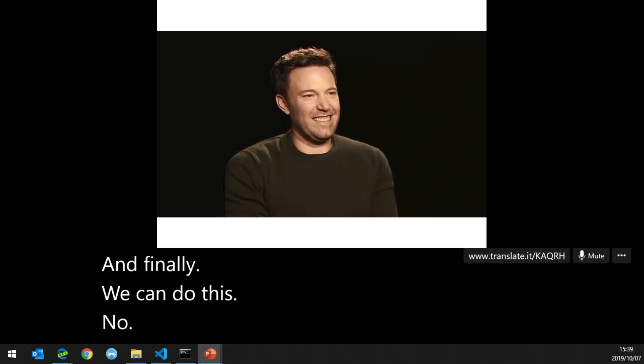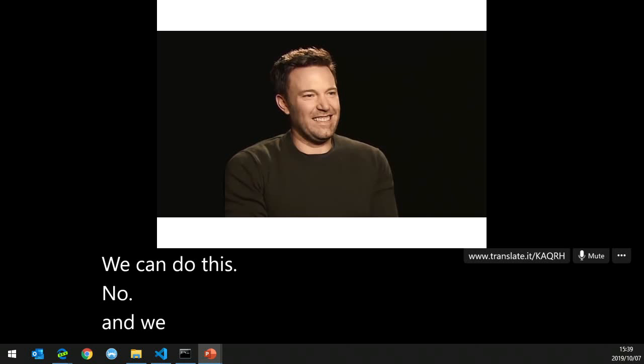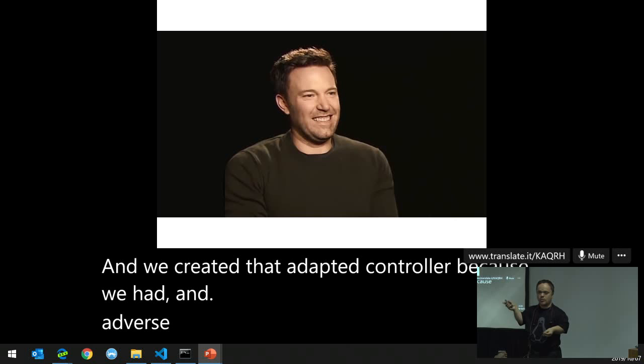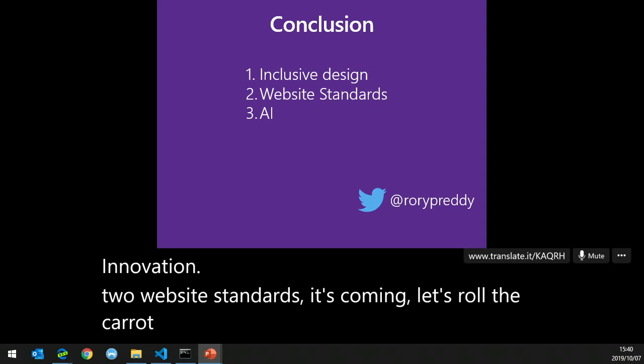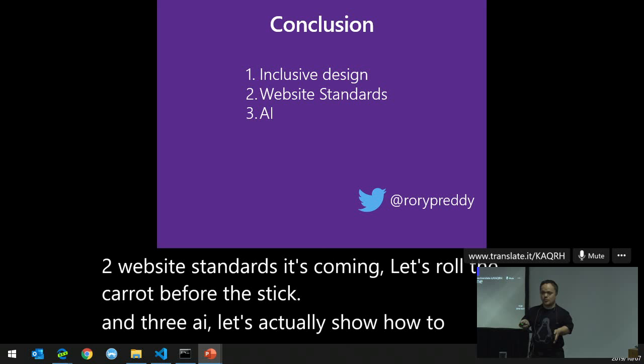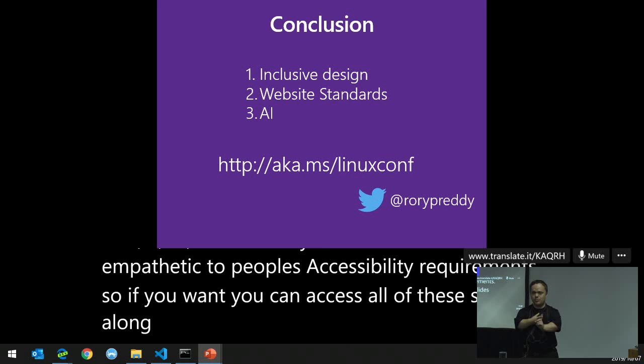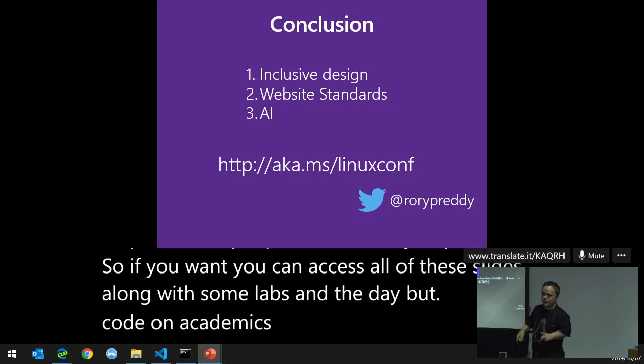We created that adaptive controller because we had a diverse, accessible team who understood unique requirements. In summary: one, inclusive design — the process to create that environment of innovation; two, website standards — let's do carrot before stick; three, AI — let's show how to be empathetic to people's accessibility requirements. You can access all slides, labs, and the DevOps code at aka.ms/linuxconf. Follow me on Twitter. Thanks everyone!